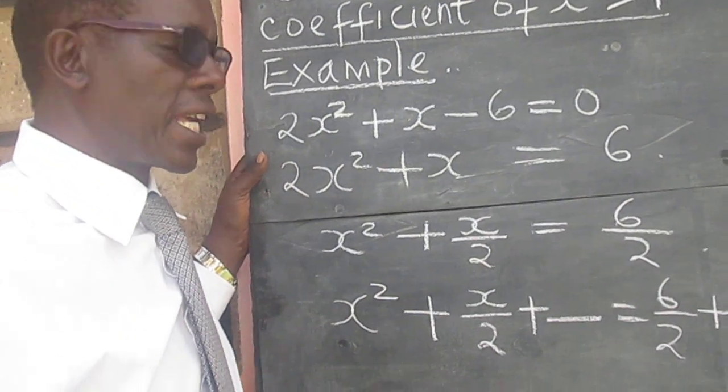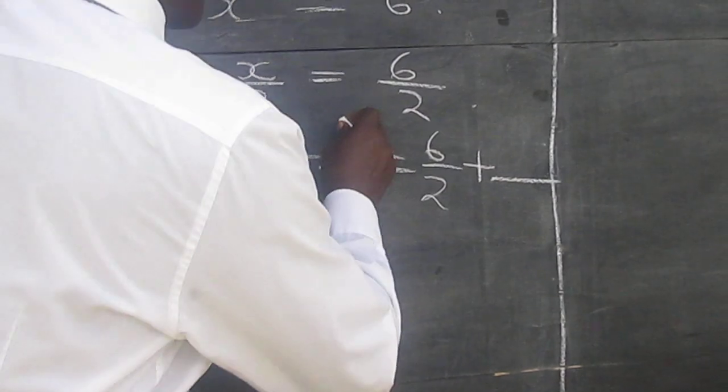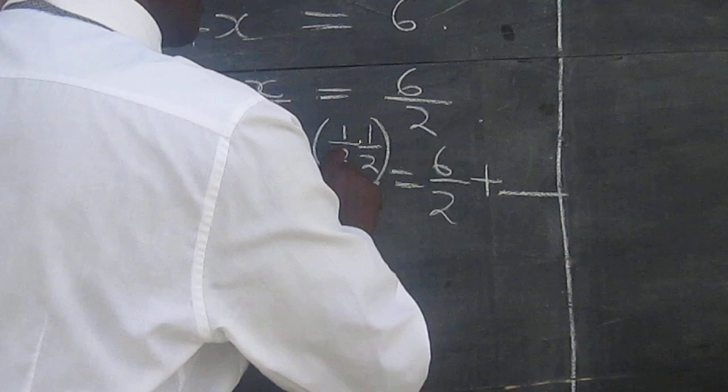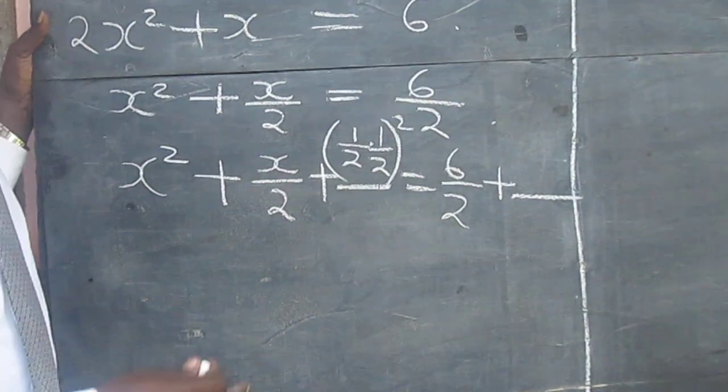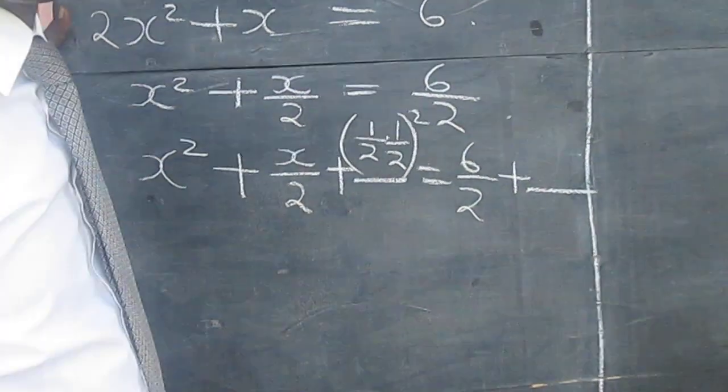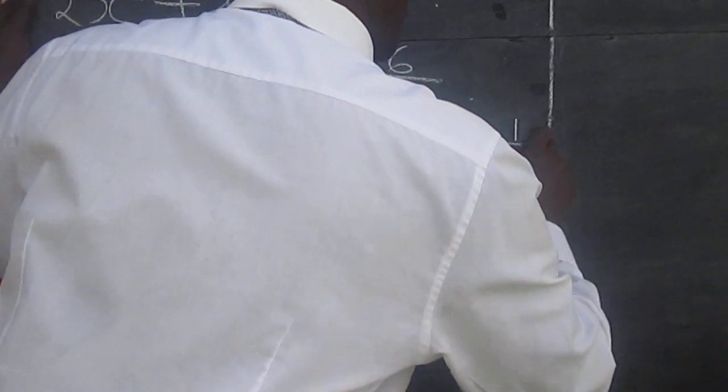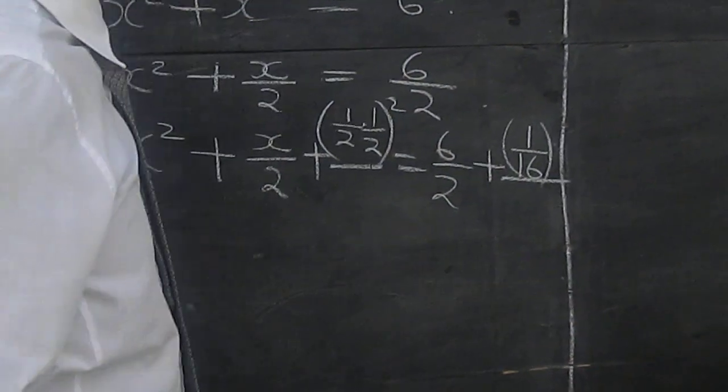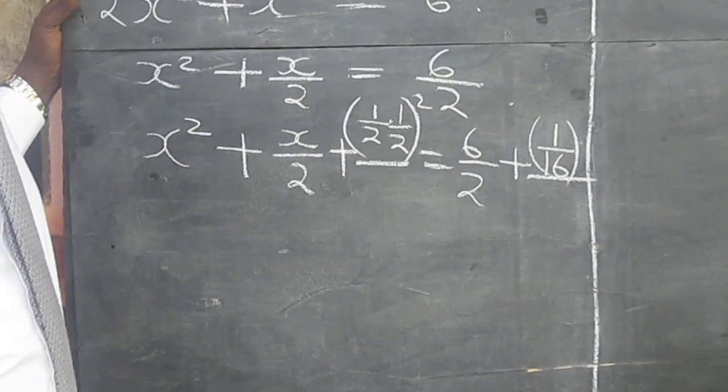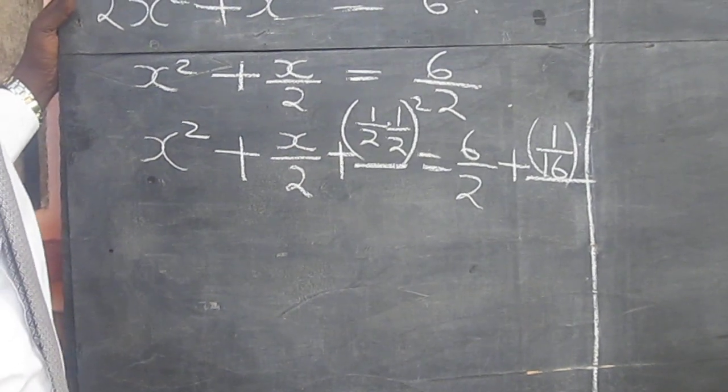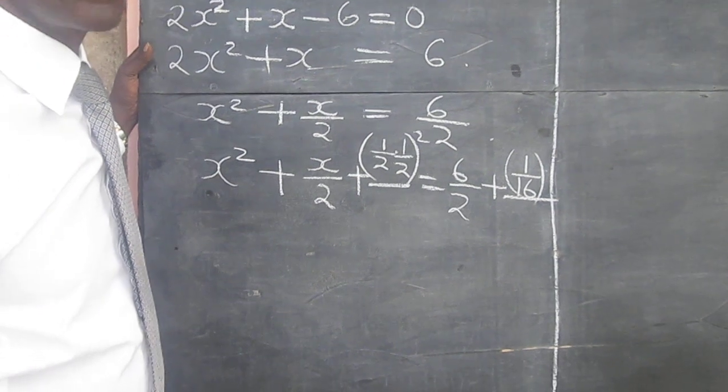So we get a half of a half squared, and that is a half of a half squared. And we are going to add it to both sides to maintain the balance. A half of a half squared is 1 over 16. So we are adding 1 over 16 on both sides.